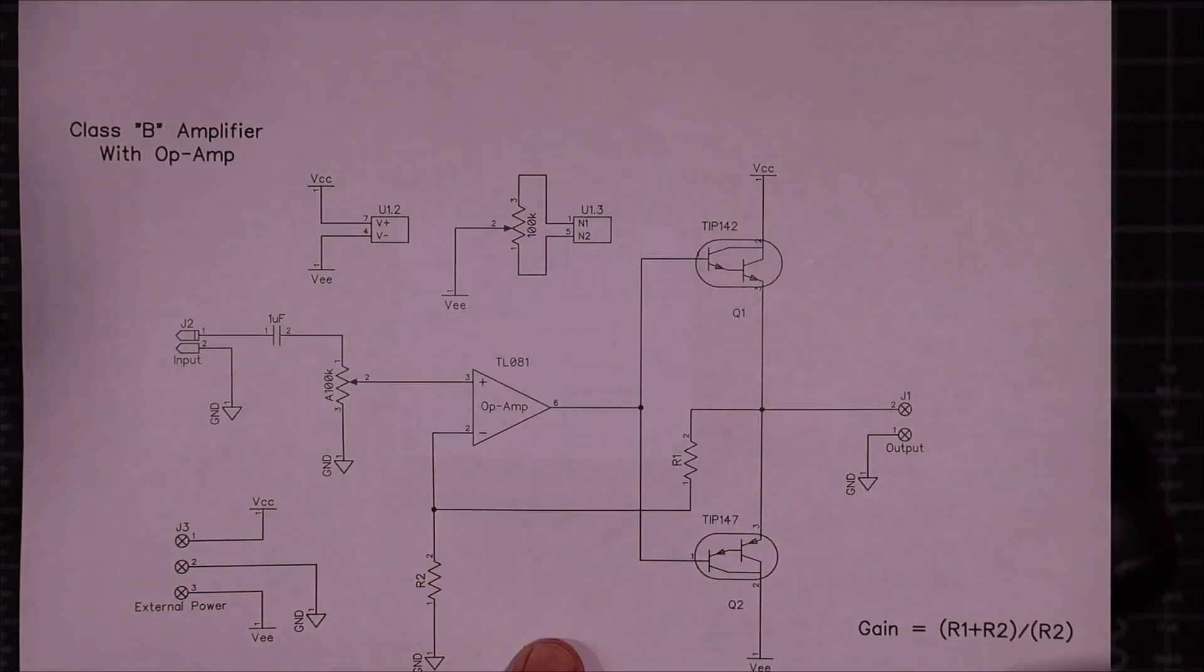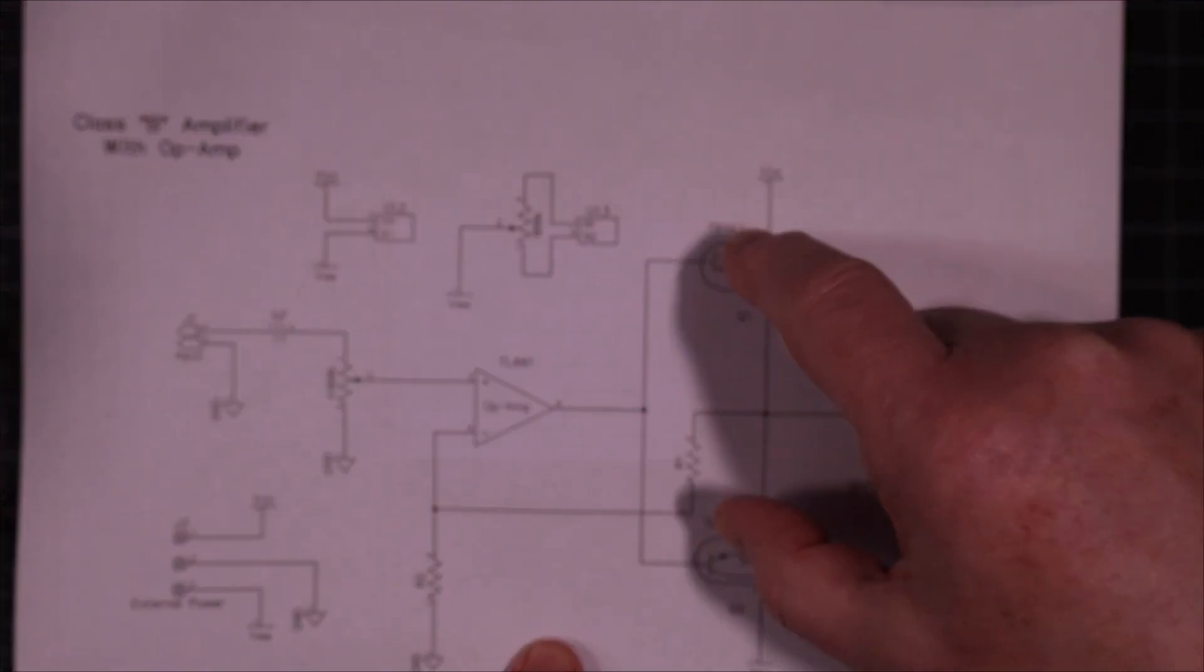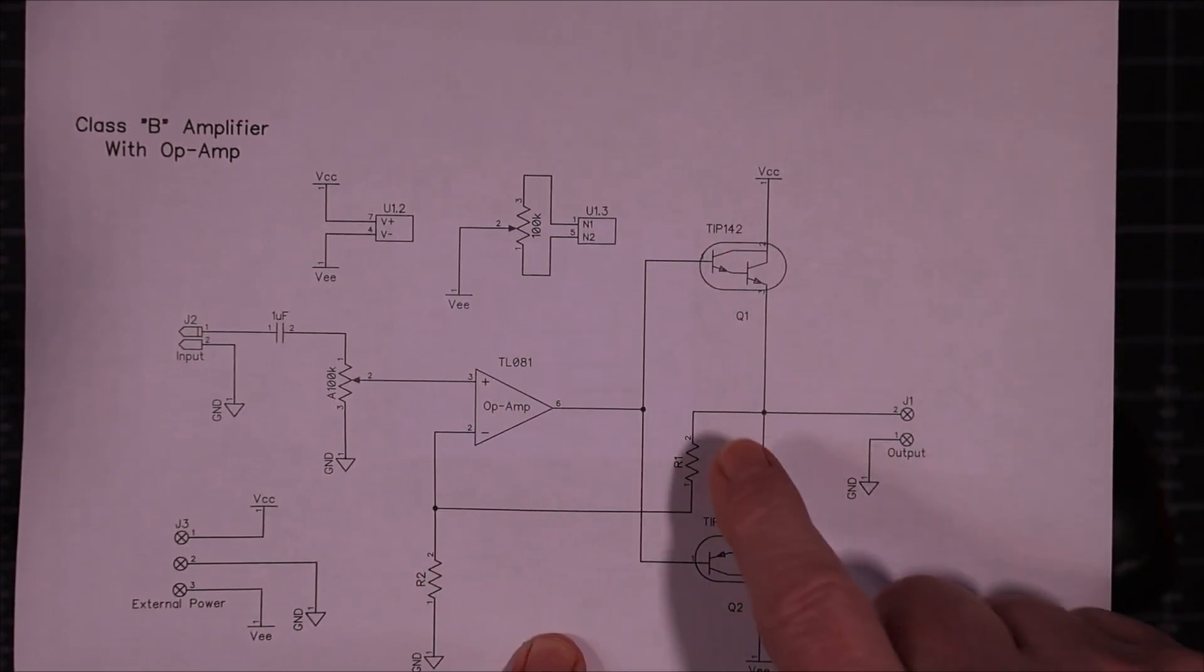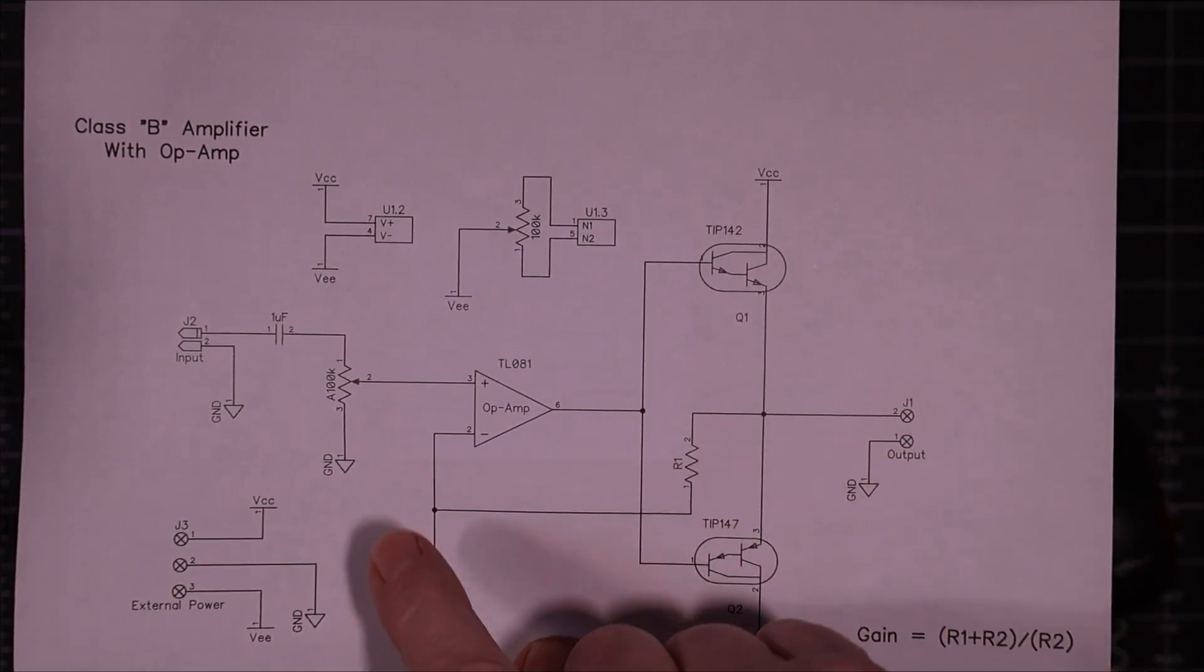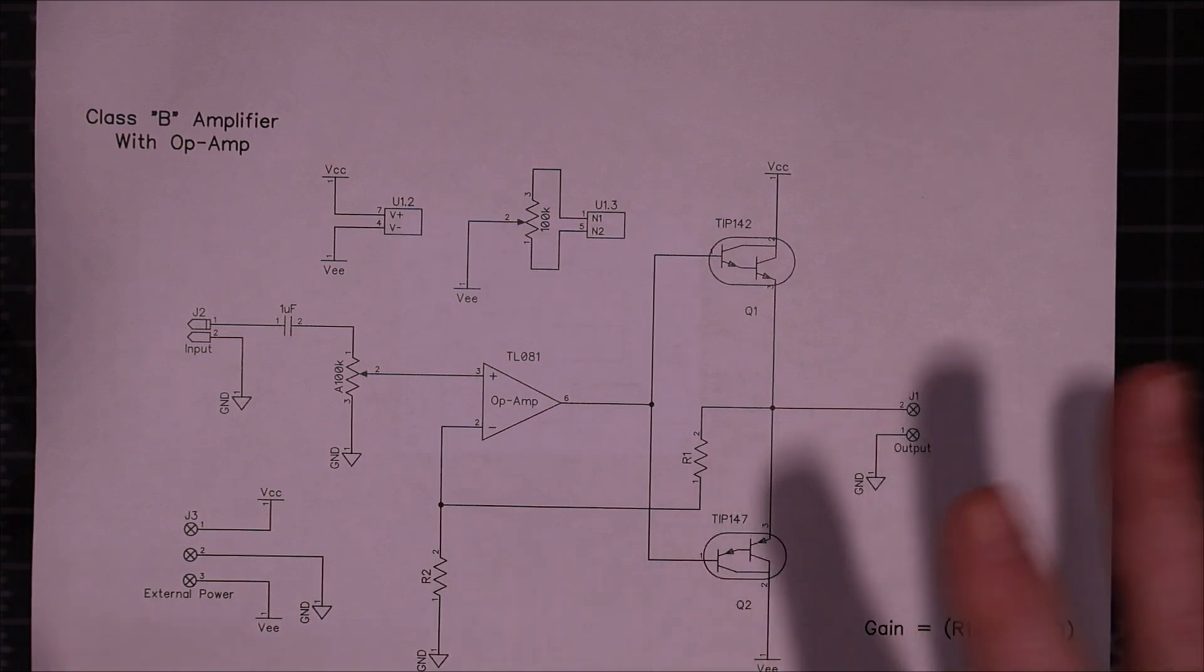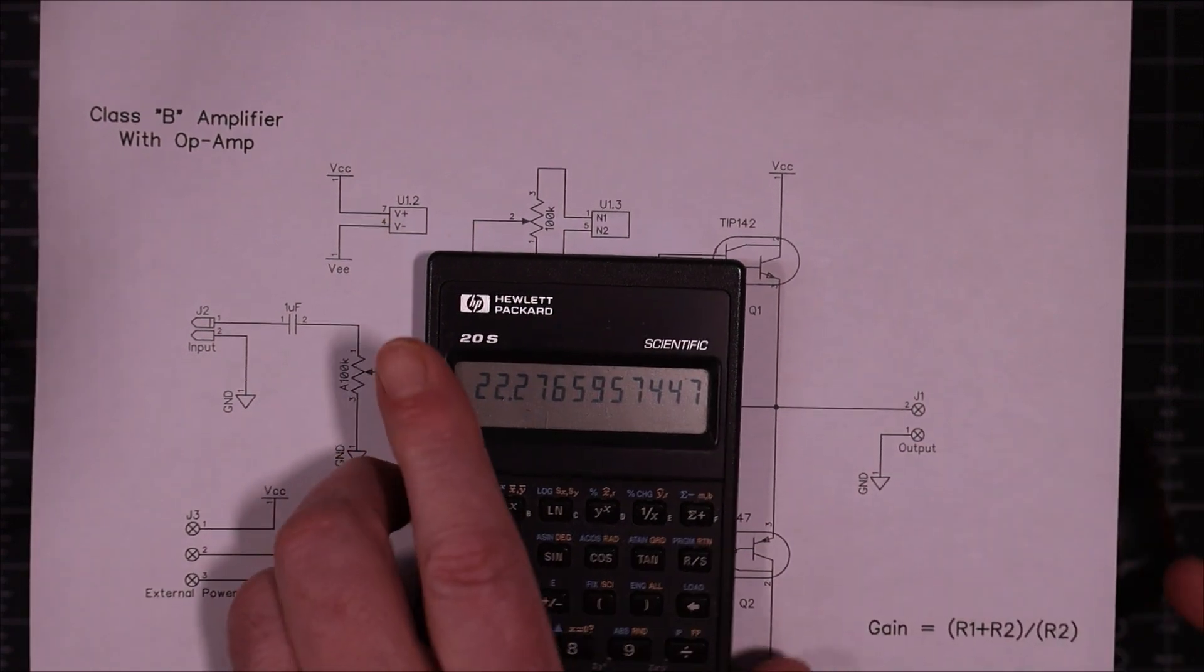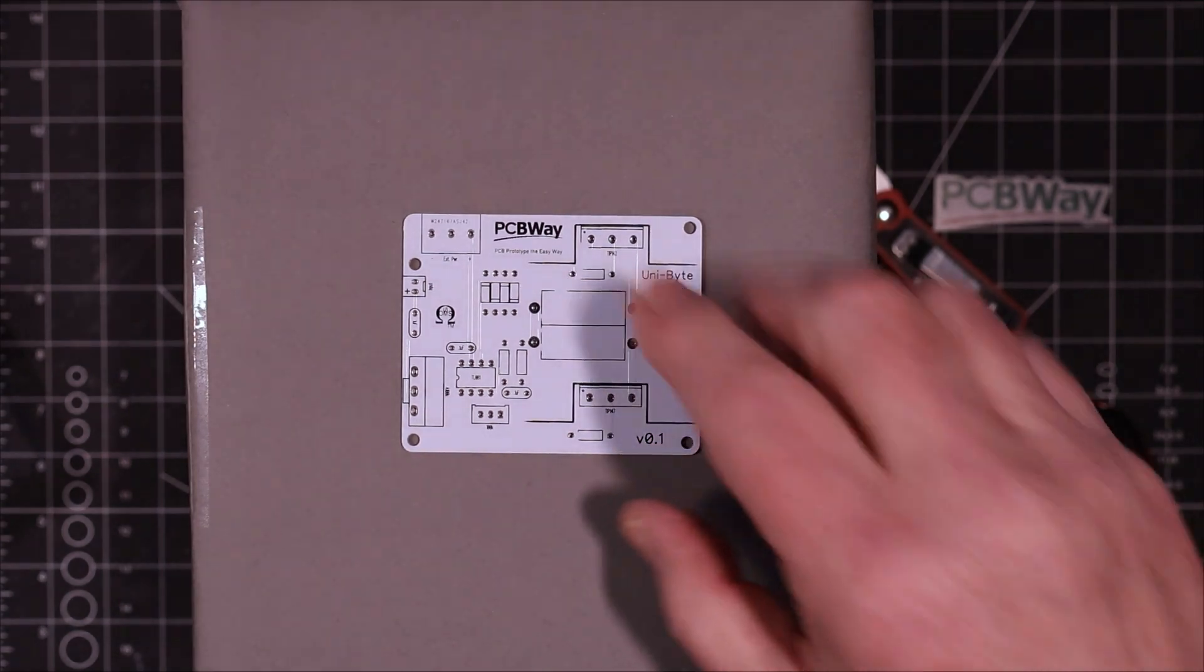I'd like to keep this a class B amplifier if possible. So if I do put diodes in, it's going to be not enough diodes to get these two transistors conducting at the same time. We're going to start out with just this here and I'm going to try and set the gain. I'm going to put a 100k here and 4.7k there. That should give us a gain of around about 22, yeah 22.3 thereabouts. Let's get one of these boards and build it up.